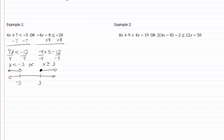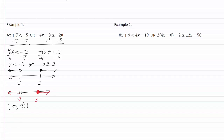Now we have arrows going in opposite directions. The 'or' means our graph goes from open dot at negative three to negative infinity, and a closed dot at three to positive infinity. For the interval notation, we write from negative infinity to negative three with a parenthesis for the open dot, union (capital U), then bracket at three, comma positive infinity with a parenthesis. So now we have the graph and the interval notation.